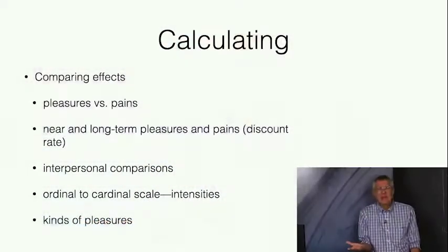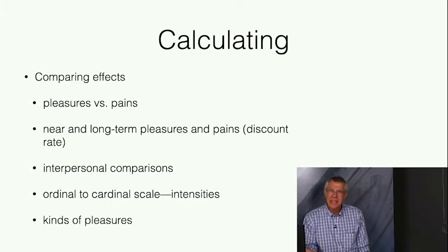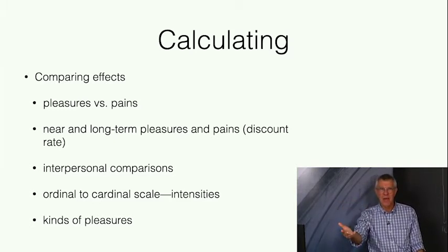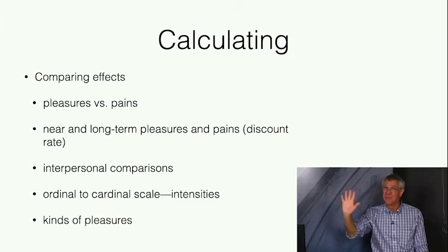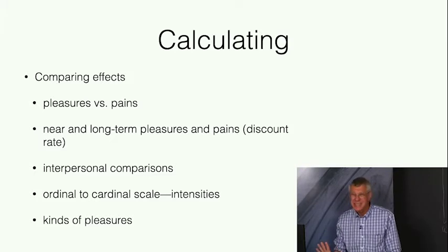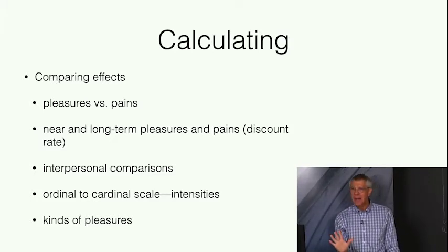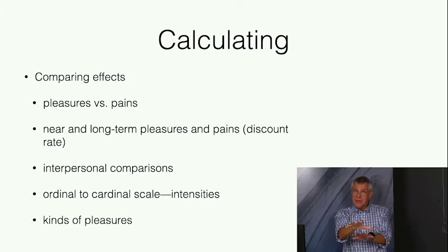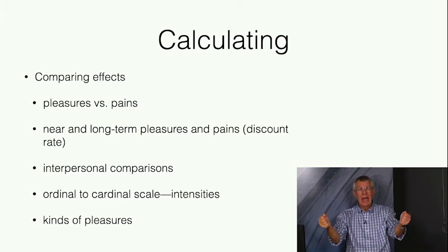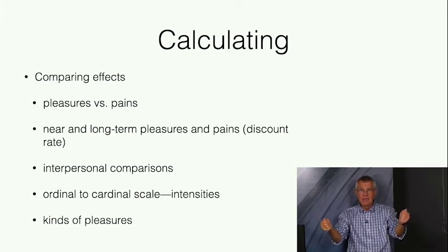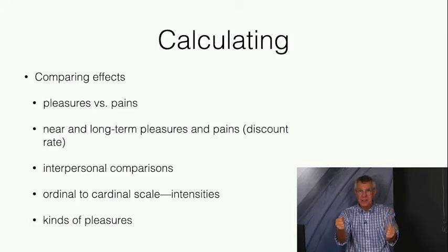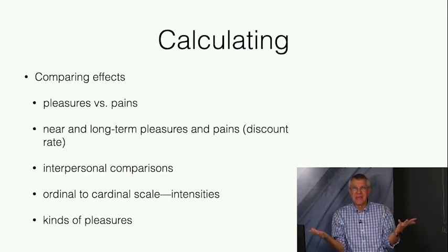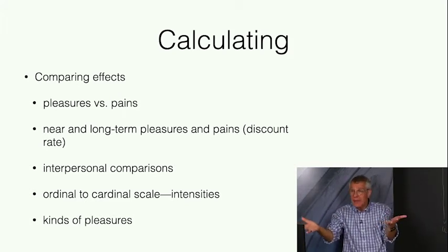There are also problems about near and long-term pleasures and pains. In business, this is explained in terms of a discount rate. I'd rather have a pleasure today than a pleasure a week from now; I'd rather face a pain a year from now than today. In general, the future discounts the value of these things. But sometimes we want to sacrifice the near term for the long term. How do we judge pleasures today versus pleasures next year? In the theory of finance, there are complicated ways of doing this when money is at stake, but we need the equivalent of a financial theory for other kinds of pleasures and pains.